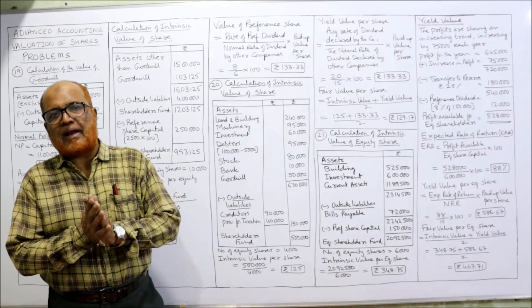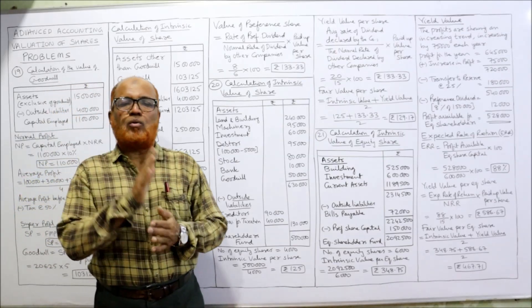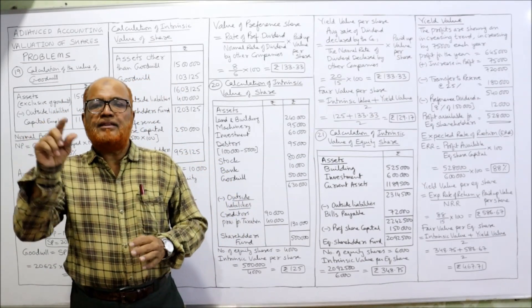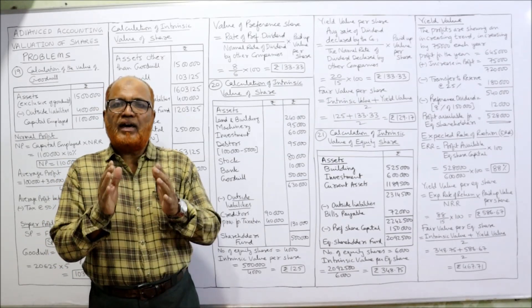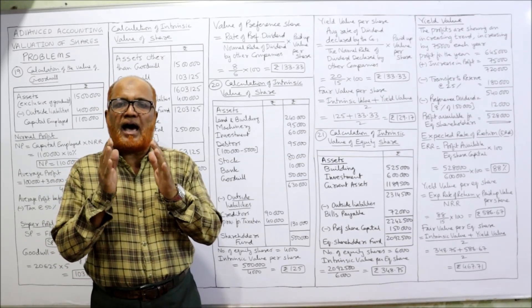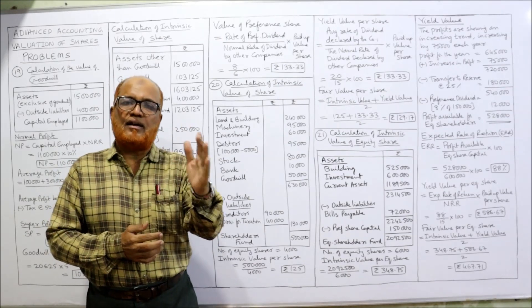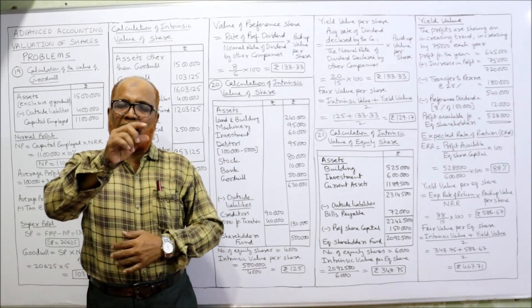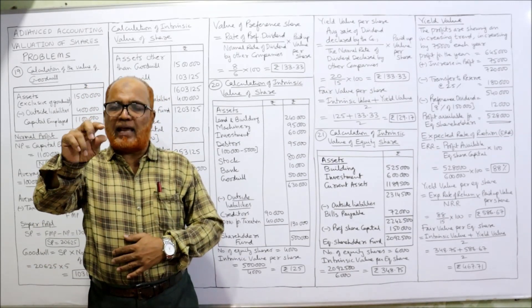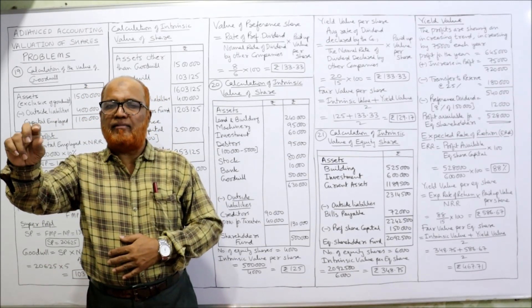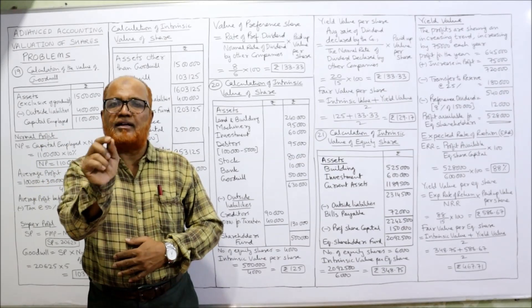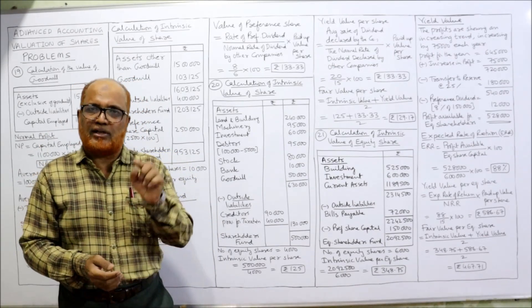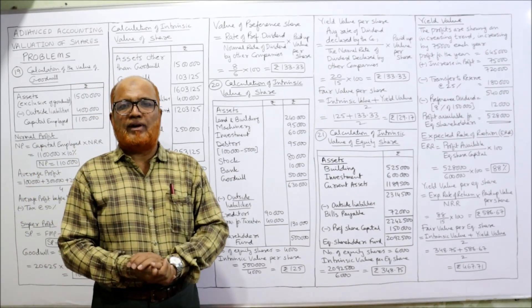Fair value is the average of intrinsic value and yield value. So we calculate the intrinsic value, calculate the yield value, add both together and divide by 2 to get the fair value of the equity share. That's what we have to calculate here.